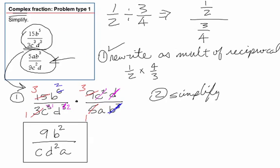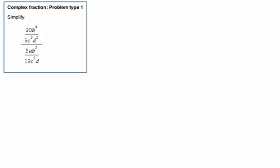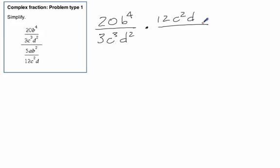One more quick example. We see the first step, we rewrite it: 20 b to the fourth over 3 c cubed d squared, and we're going to multiply that by the reciprocal, which is 12 c squared d over 5 a b squared. So that's step one.